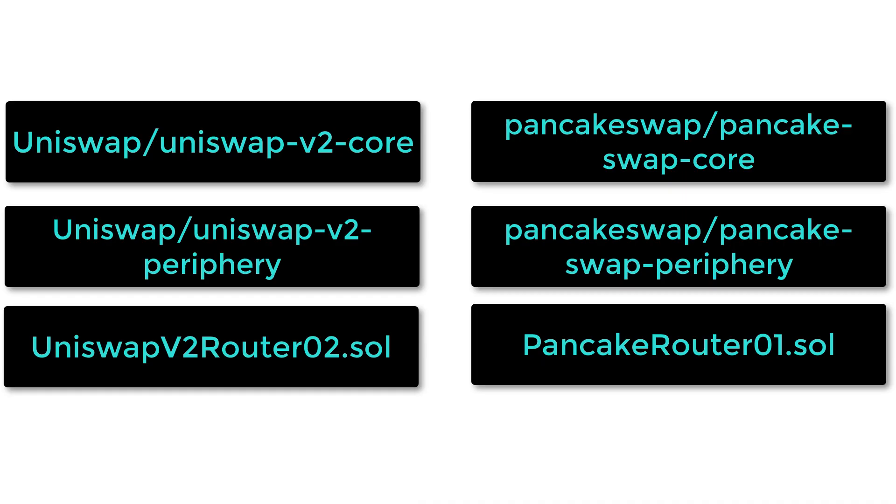Once you understand how Uniswap works, it's time to fork the trading feature of PancakeSwap. On another video on my channel, I show how to fork Uniswap, and forking the trading feature of PancakeSwap is very similar — there are just a few differences. The names of the repo and some contracts are slightly different. I put some tips about this, and if you find other differences, you should be able to figure it out. It's almost the same thing.